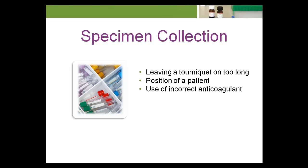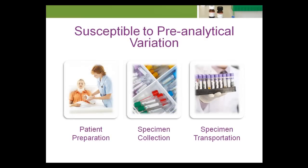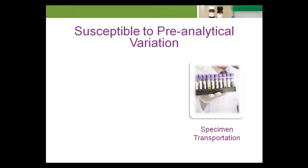If a different anticoagulant is used, a lower level of glucose could be reported. Hemolysis, the breakage of red blood cells, can cause the increase of certain analytes due to leakage of red cell components into the surrounding fluid. It can also cause interference in tests using, for example, a spectrophotometric method. Other factors that can affect the pre-analytical variation of a result are issues with specimen transport.